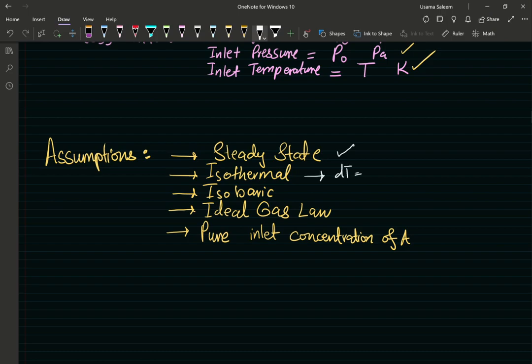Isothermal. No change in temperature. Good. Isobaric. No change in pressure. Good. Ideal gas. We're going to keep that in mind. Ideal gas law assumes low pressure. We're assuming low pressure.